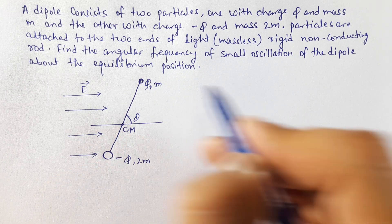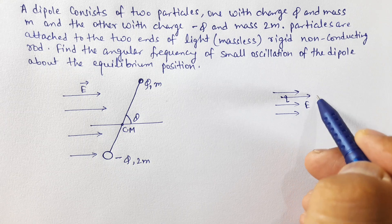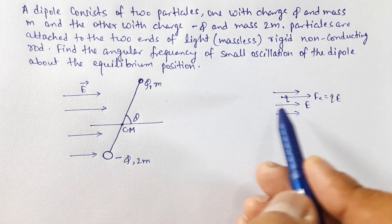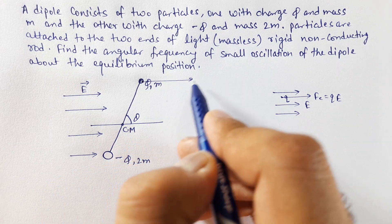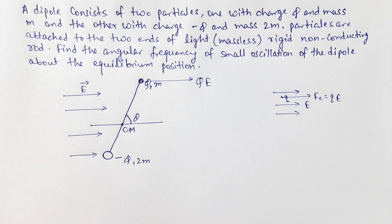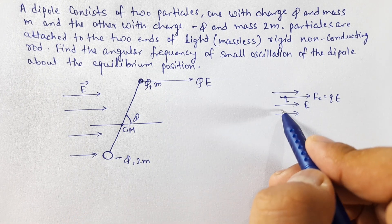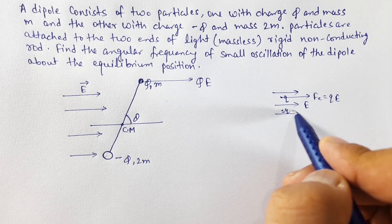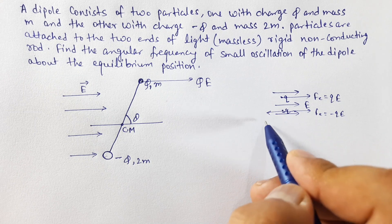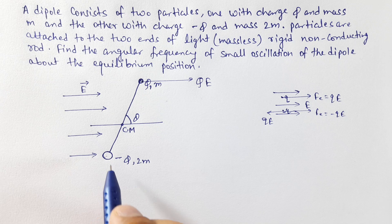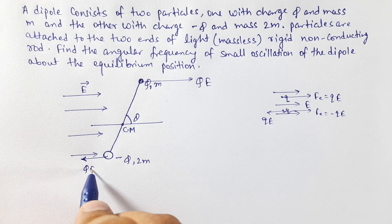This is the electric field E. If charge q is placed, the force on it is q times E. The electric field gives the direction of force for charge q. Similarly, for charge minus q, the direction of force is opposite — so each force has magnitude q into E.